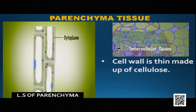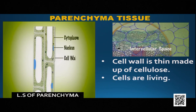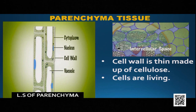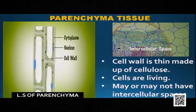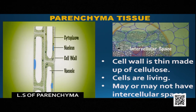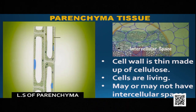The characteristics of parenchyma tissue: the cell wall is thin and made up of cellulose. The cells are living — they have cytoplasm and nuclei, so definitely the cells are living. They may or may not have intercellular spaces; it varies from plant to plant. You can see in the picture — one type of parenchyma tissue is shown having intercellular spaces, and in the first picture there are no intercellular spaces at all.